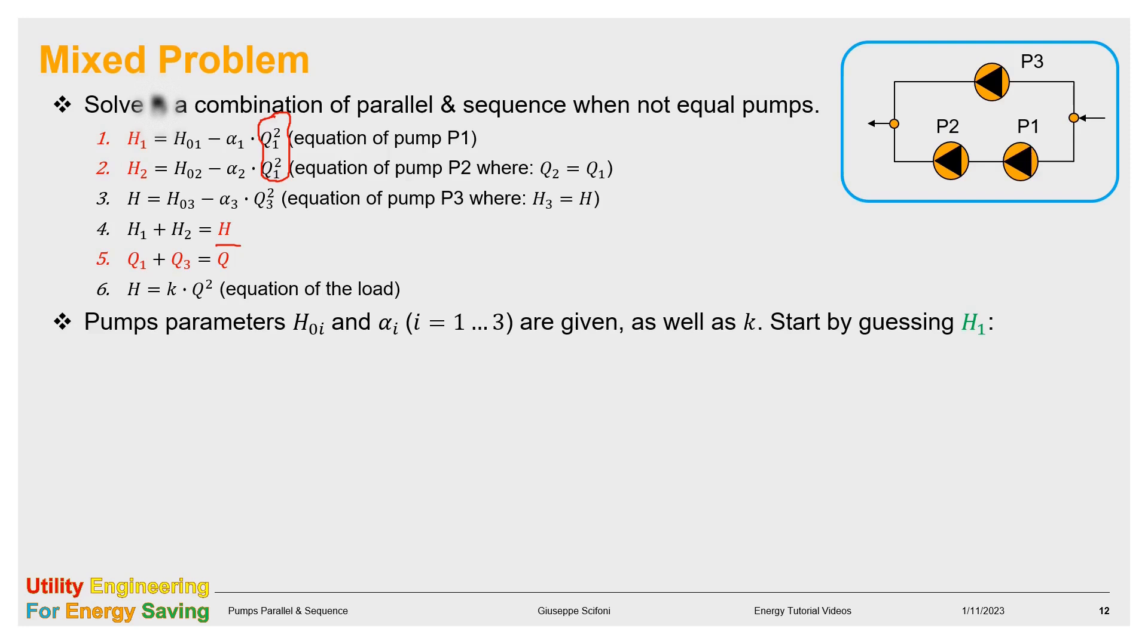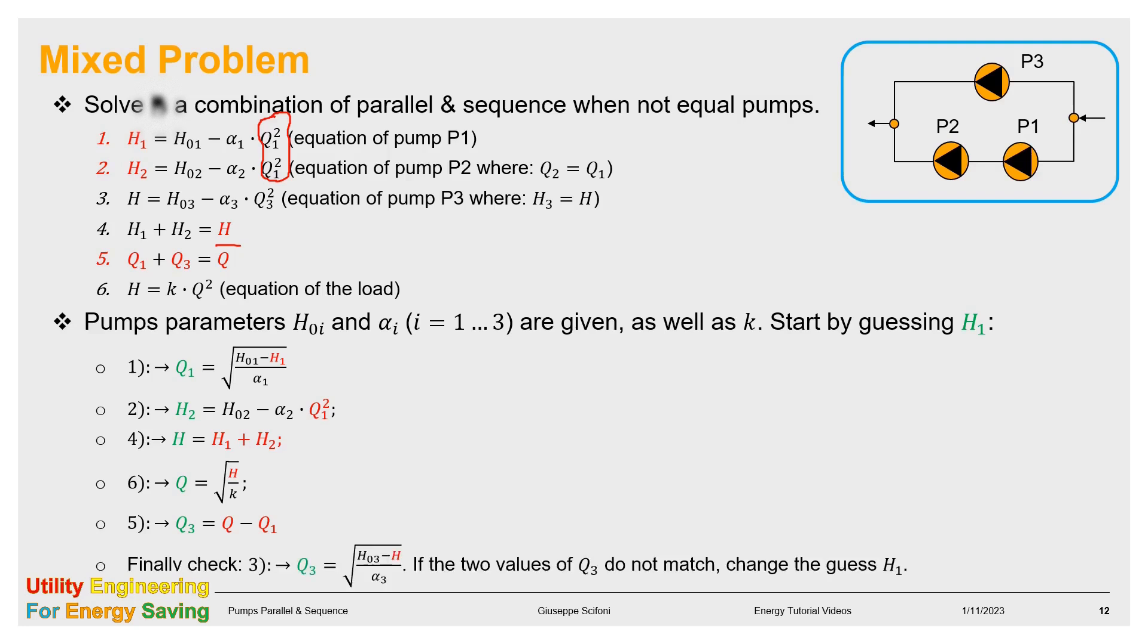We start the solving process by guessing H₁. From equation 1 we get Q₁. From equation 2 we find H₂. From equation 4 we calculate H and from equation 6 the flow Q of the system. The flow Q₃ is given by equation 5. The last equation, number 3, we use to confirm the flow Q₃. If the two values do not match, we need to change the guess H₁ till convergence. Of course, the procedure can be automatized by a software. For example, the Excel goal seek.